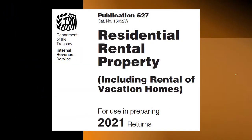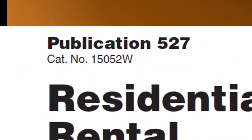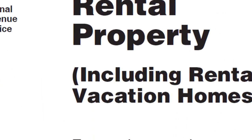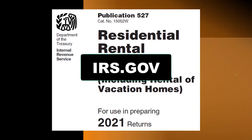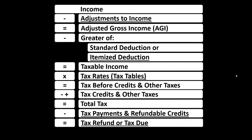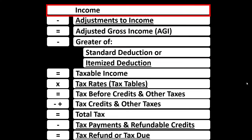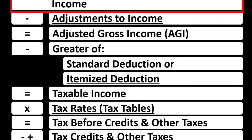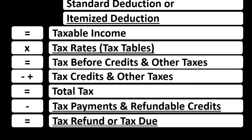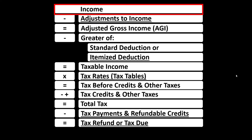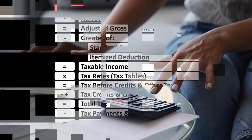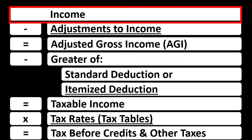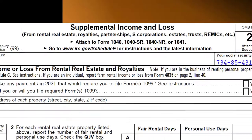Most of this information can be found in Publication 527, Residential Rental Property, Tax Year 2021, on the IRS website at irs.gov. The Income Tax Formula — we're focused on Line 1 Income, although we would have a separate sub-schedule, basically an income statement with income and expenses, where expenses are basically deductions. The net then rolls into Line 1 Income of the Income Tax Formula, as well as eventually page 1 of the Form 1040.